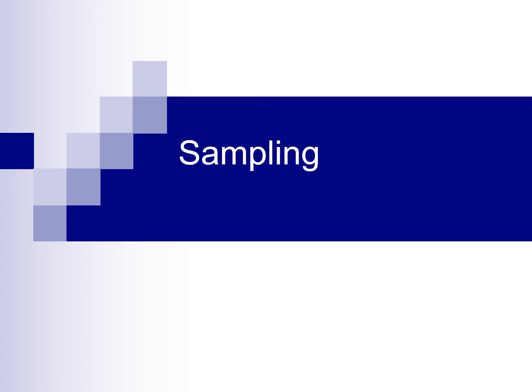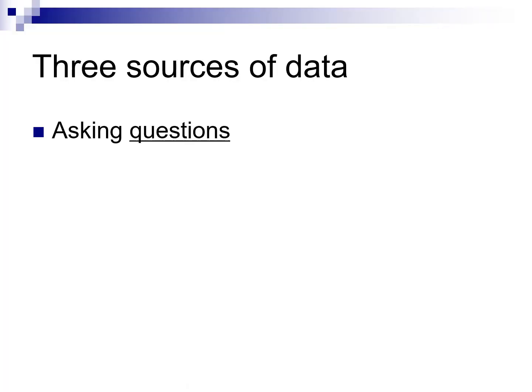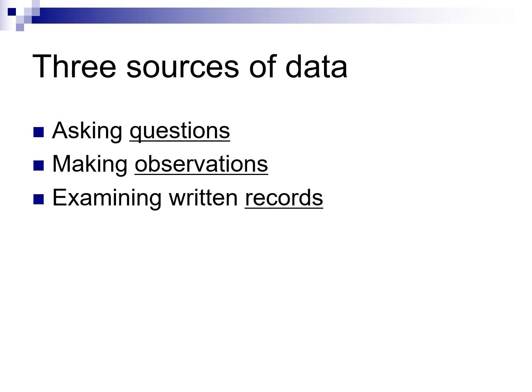The topic today is sampling. In criminal justice there are three basic strategies for collecting data. They're based around what you call empirical — empirical meaning the senses: touch, smell, taste, sight. Generally it involves asking questions, making observations, and examining the written record.